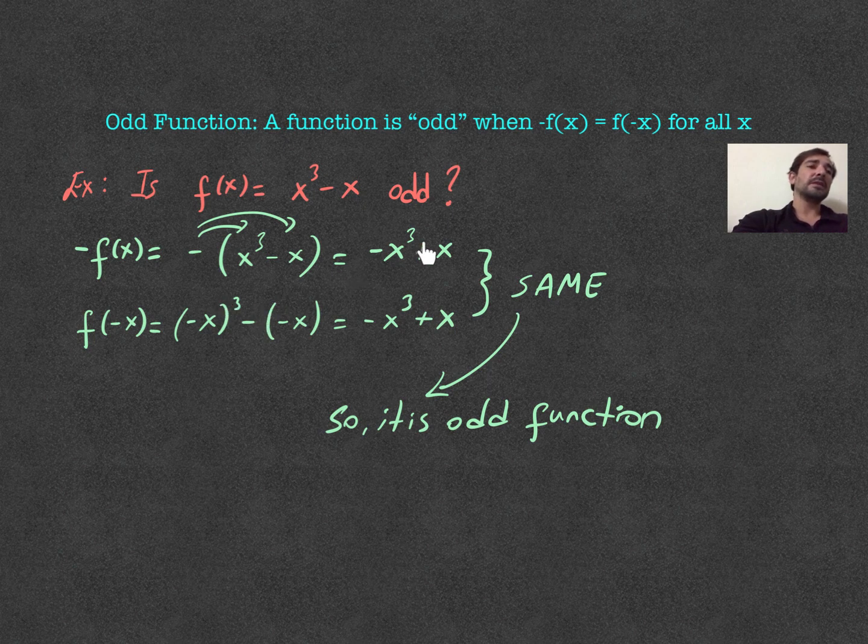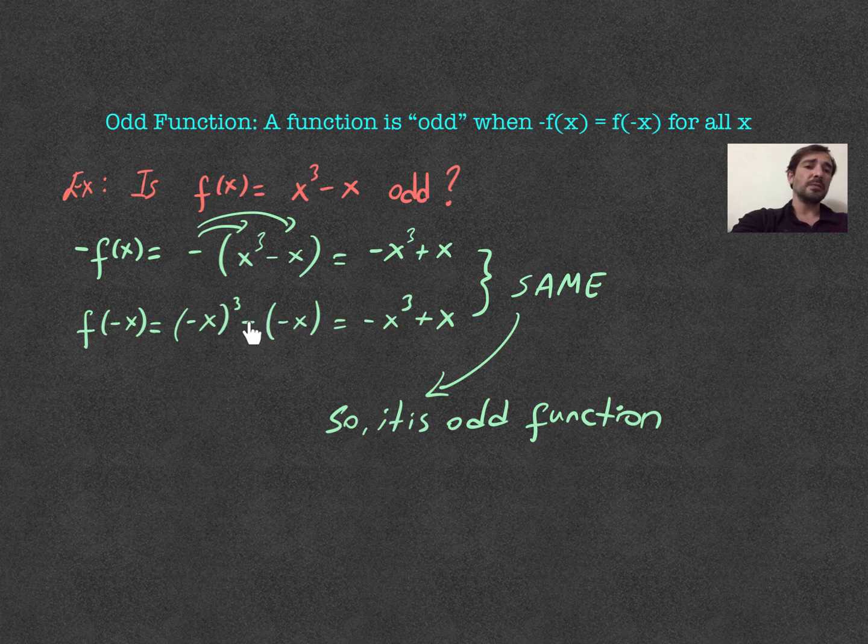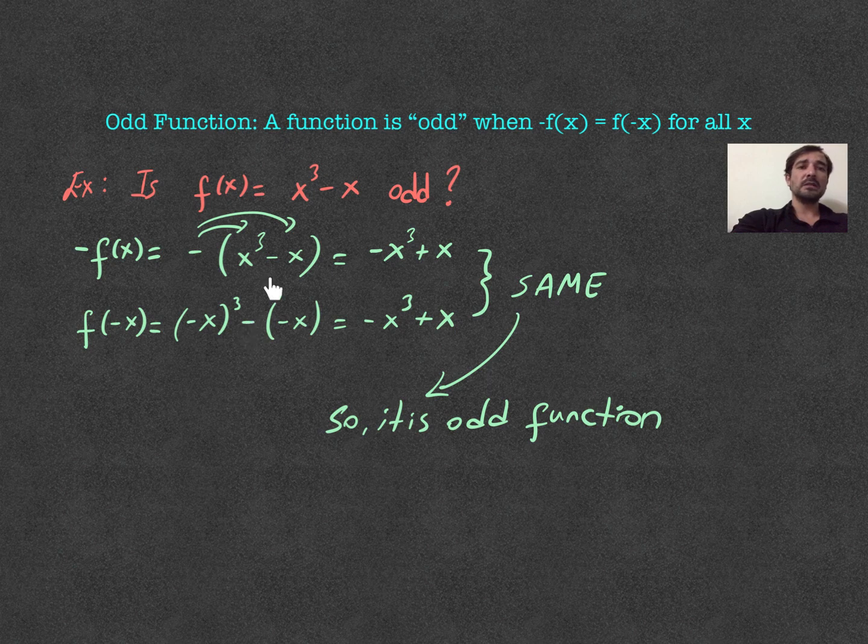Now, next thing is to get f negative x. I just have to plug in negative x into my f of x function. So, negative x power of 3 here minus, this is very important. And you need to really be careful in this case. So, minus is the same minus here. But now, my x is negative x.